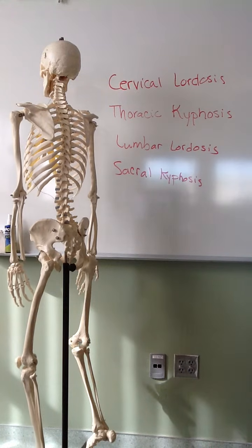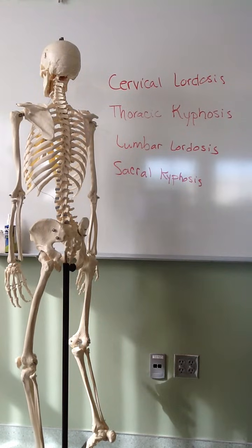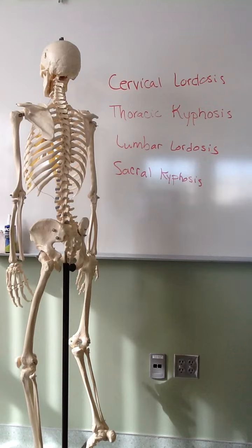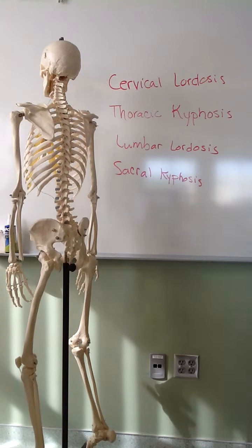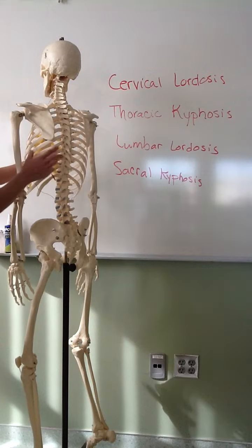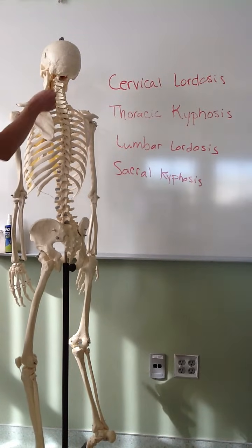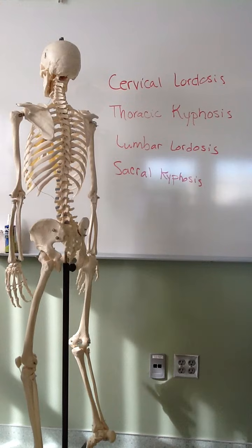Welcome to the second video in our skeletal system series. Today, we'll finish up the axial skeleton by looking at the bones of the spinal column, or the vertebrae, as well as the bones of the thoracic cage, which surrounds our thoracic cavity, or chest cavity. We'll start by looking at all of the vertebrae in the spinal column.